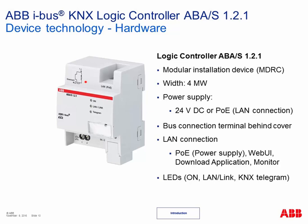On the hardware side, it's a modular DIN rail device with four modules. It requires a power supply — either 24V DC or power over Ethernet — there is no power supply via the KNX bus cable. The LAN connection serves multiple purposes: accessing an internal web user interface via a browser, fast download of the application, and online monitoring functions.